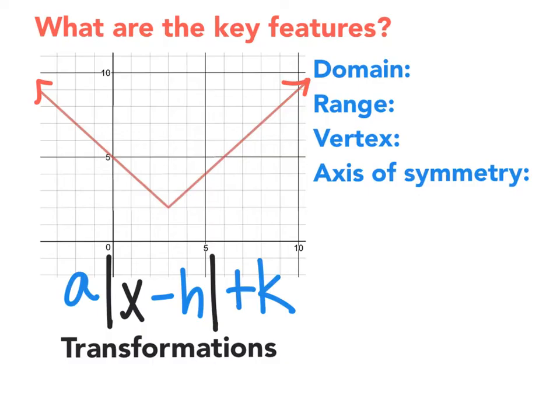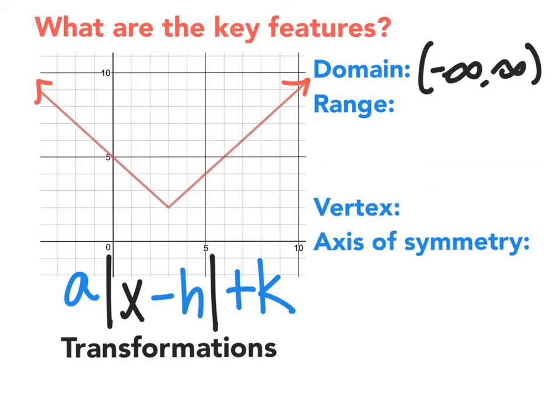All right, so for all absolute value graphs, the domain is going to be from negative infinity to infinity. Now as far as the range goes, if the graph is facing up in a positive V, the range will be from k to infinity. But if it's facing down, the range will be negative infinity to k.